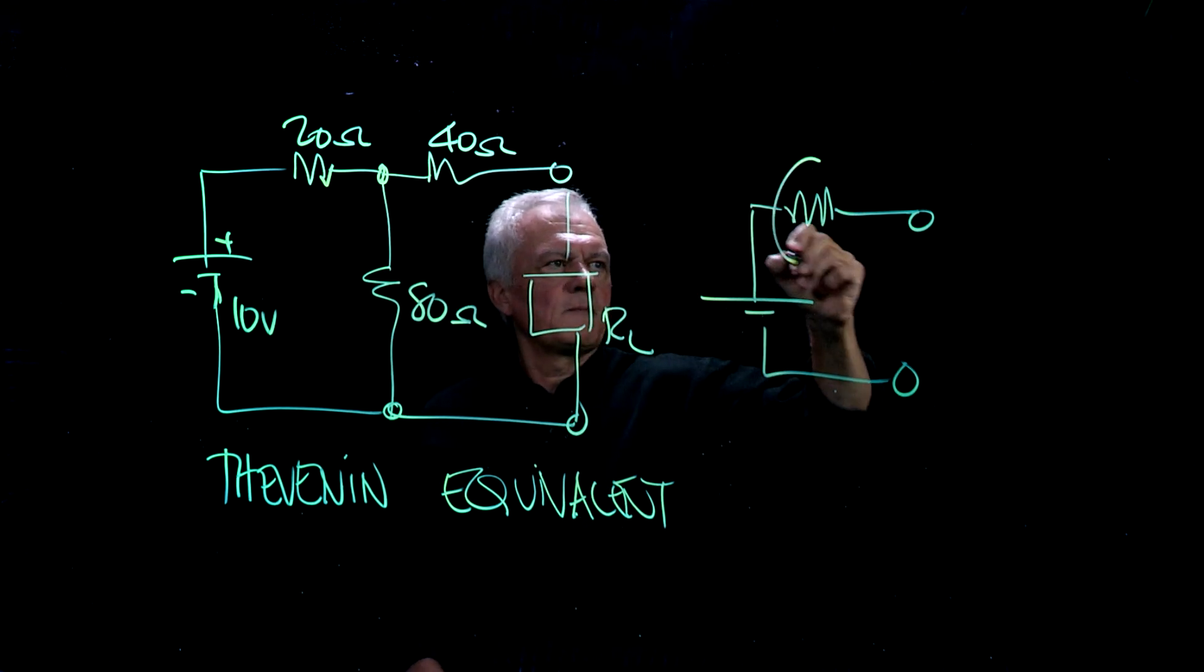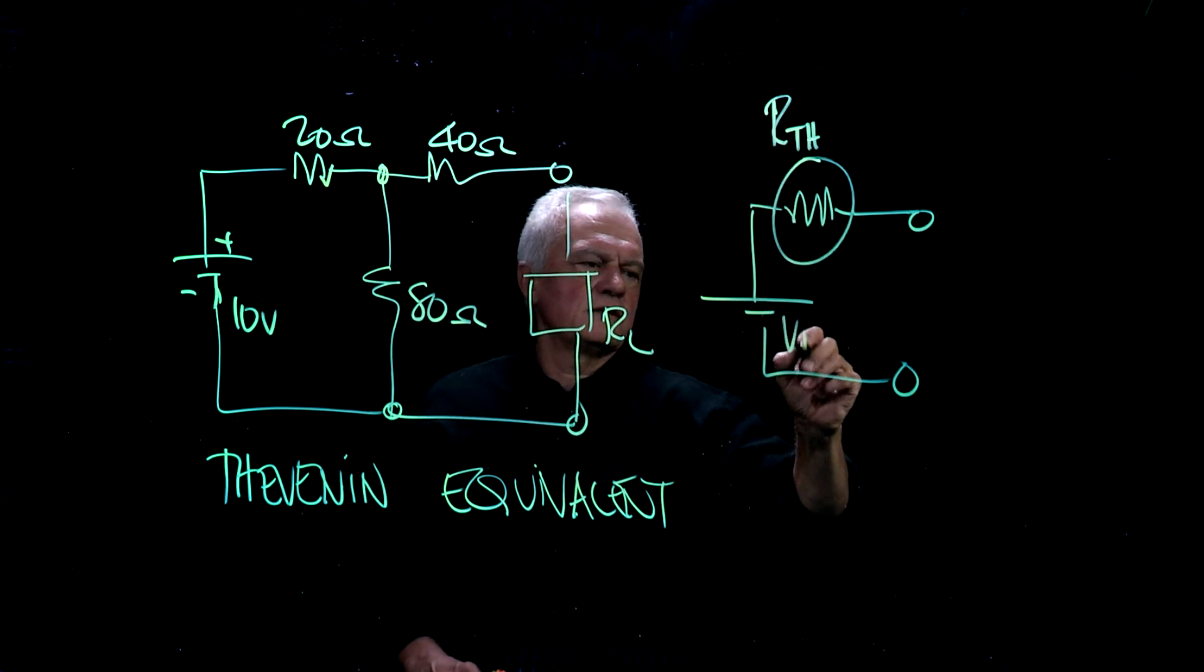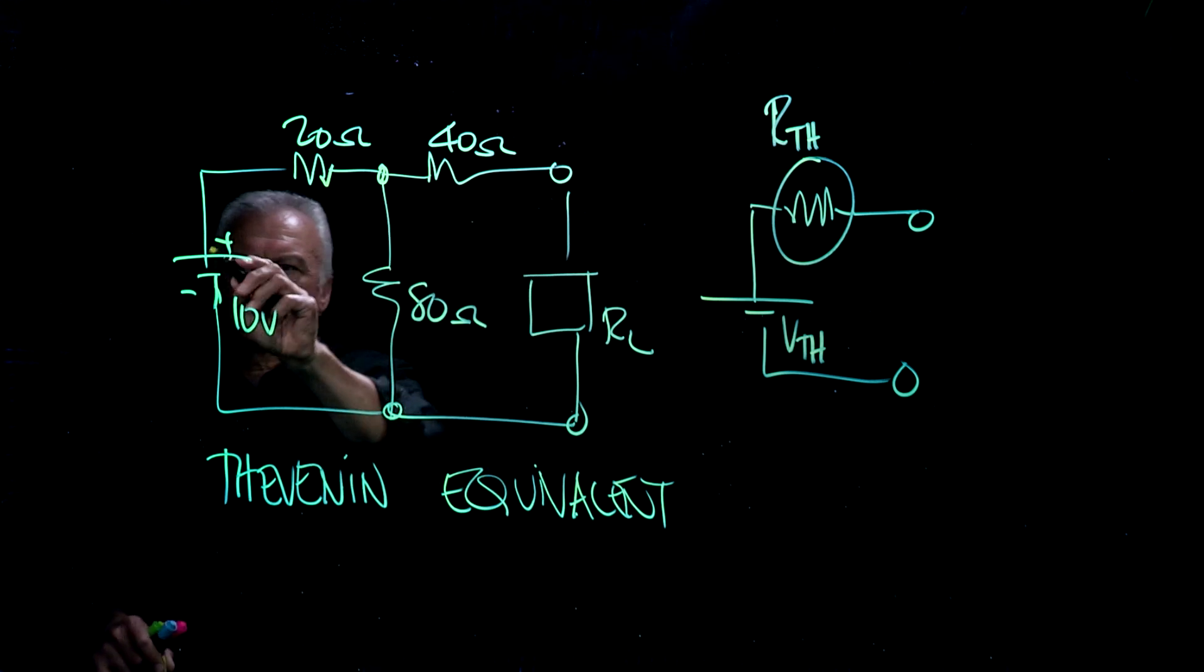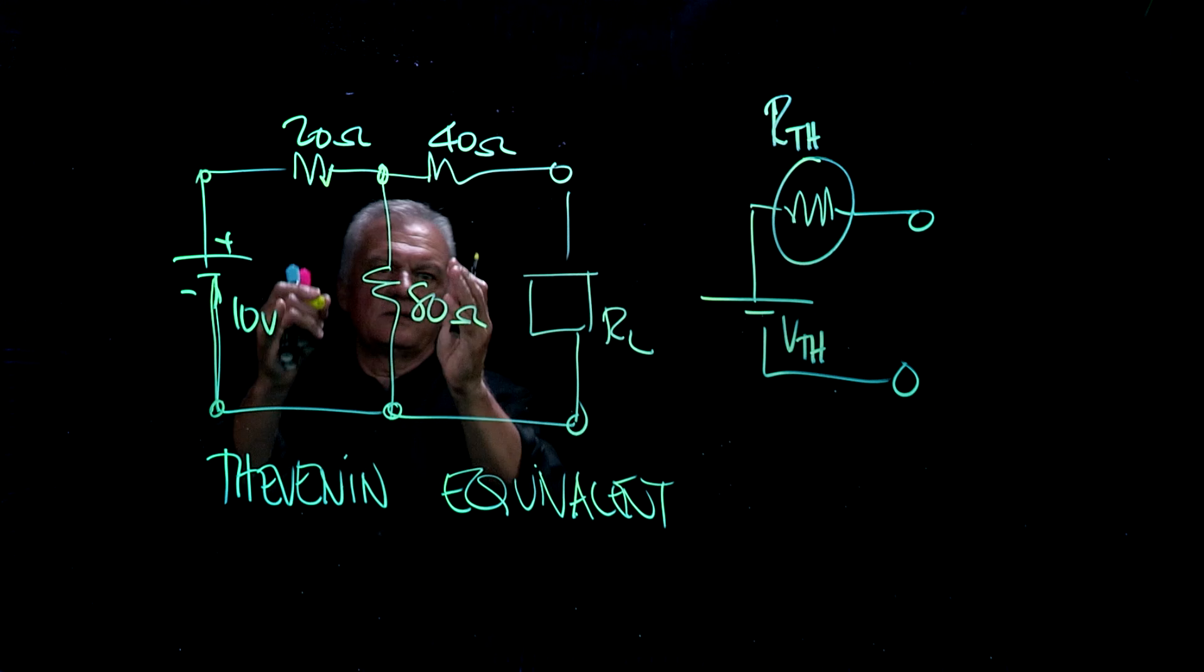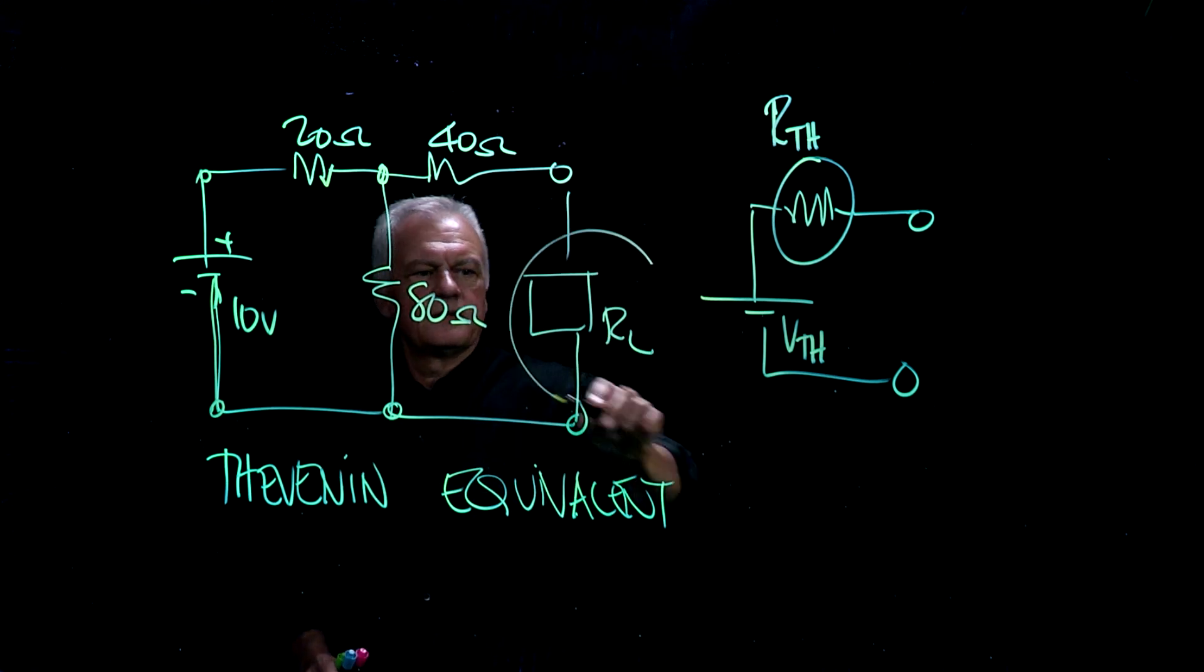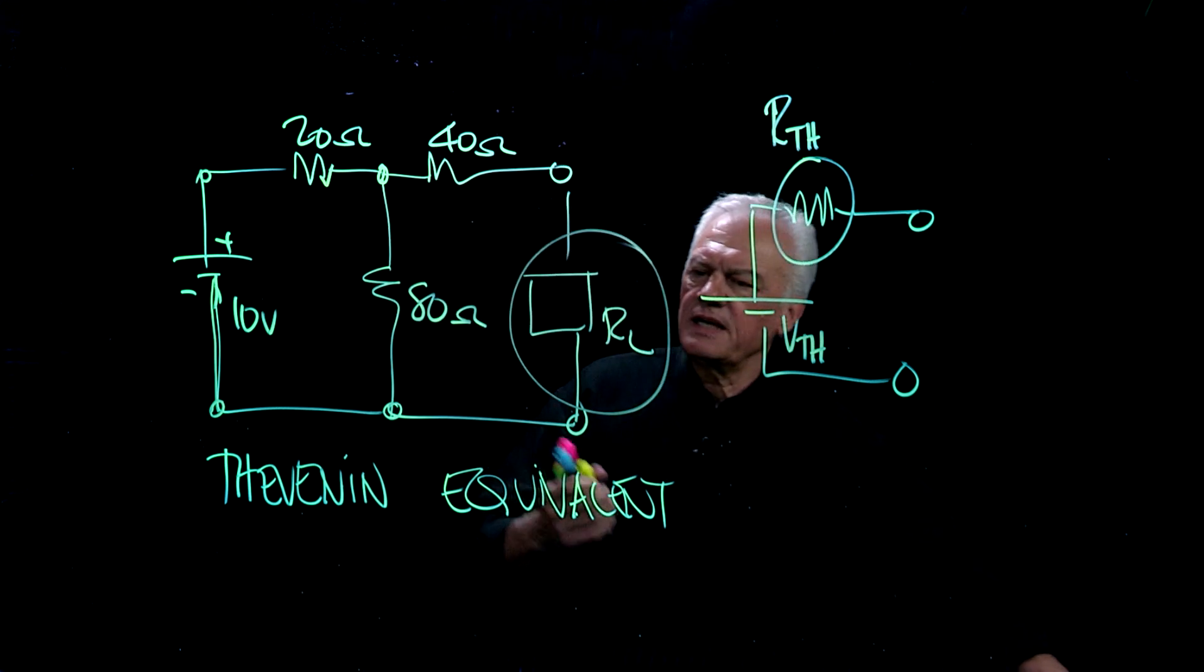So, our R Thevenin has to be calculated, and this V Thevenin has to be calculated. Even though we're looking at this circuit here, we need to reduce this to this. Now one of the things you'll note here is that this does not have a play in the circuit analysis. Why? It could be anything.